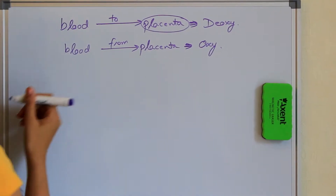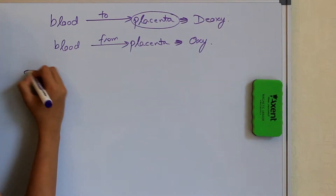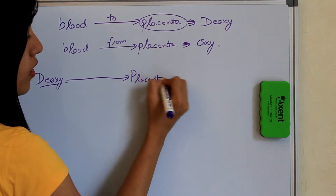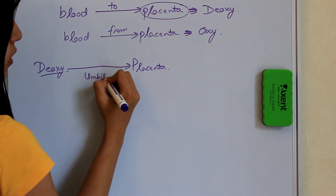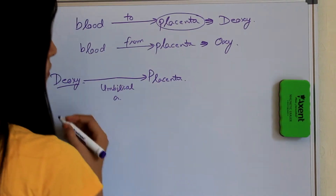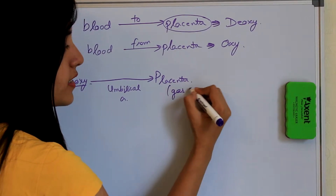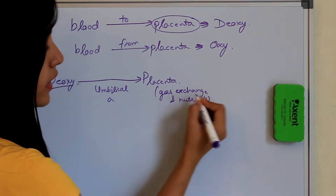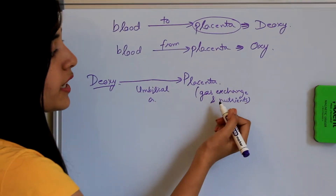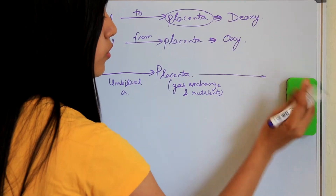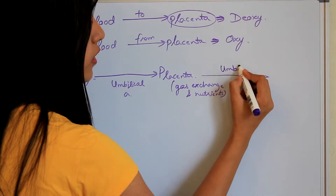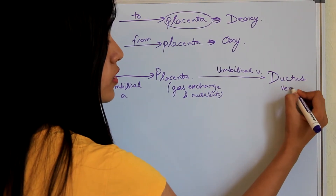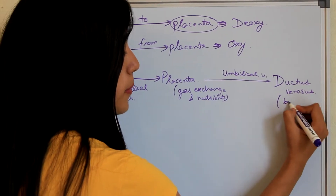Starting from here, the deoxygenated blood from the fetus goes to the placenta via umbilical arteries. The function of the placenta, as we all know, is gas exchange and nutrients. When the fetal blood has taken up nutrients and participated in gas exchange, it will then go via the umbilical vein to the ductus venosus — the structure which bypasses the liver.